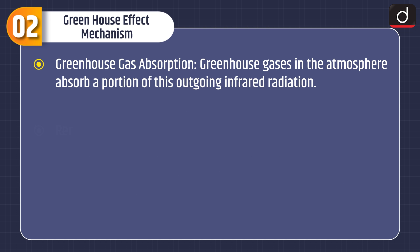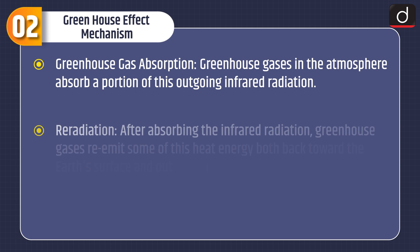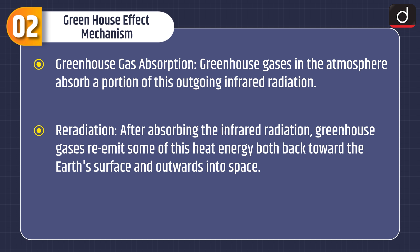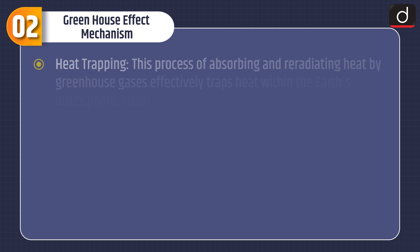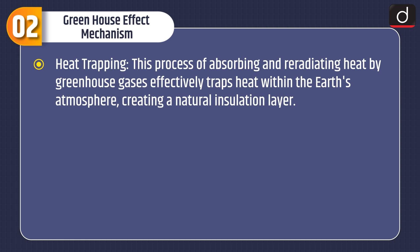Third, greenhouse gas absorption: greenhouse gases in the atmosphere absorb a portion of this outgoing infrared radiation. Fourth, re-radiation: after absorbing the infrared radiation, greenhouse gases re-emit some of this heat energy both back toward the Earth's surface and outwards into space. Fifth, heat trapping: this process of absorbing and re-radiating heat by greenhouse gases effectively traps heat within the Earth's atmosphere, creating a natural insulation layer.